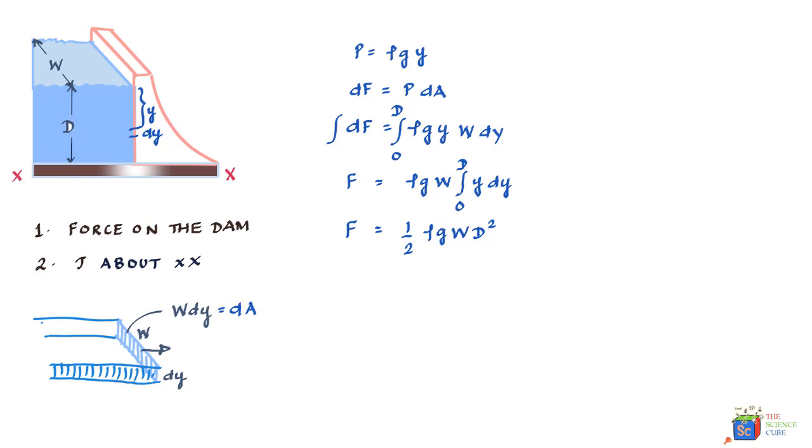Now part two of the problem wants us to find what is the torque about xx due to this water. Now you can see that the force is changing from top to bottom, it is not constant because the pressure is changing. Hence we do not have a single force value to just multiply with the distance to get the torque.